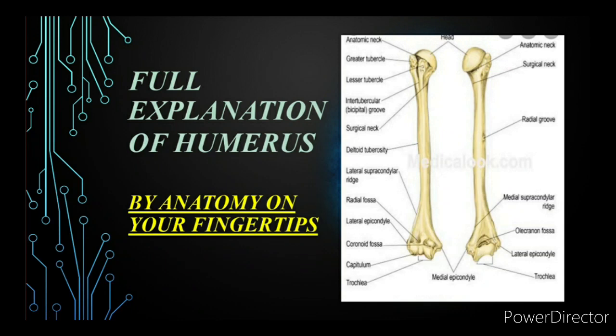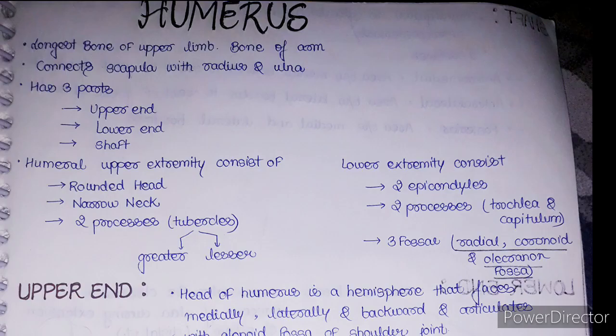Hello everyone, welcome back to my channel. As we have studied about the clavicle and scapula, now it's time for the humerus. So without wasting any time, let's get started. The humerus is the longest bone of the upper limb — remember, it's the longest of the upper limb only, not of the whole body. The longest bone of the whole body is the femur, not the humerus. It is the bone of the arm.